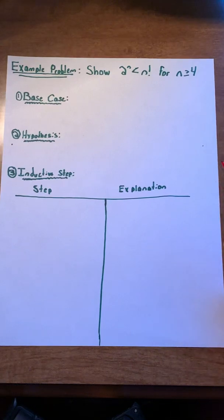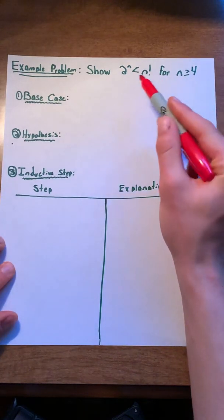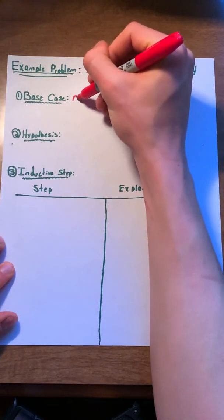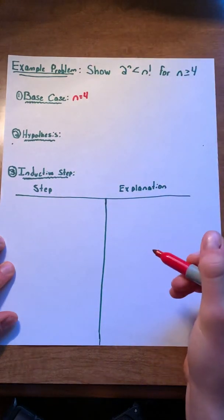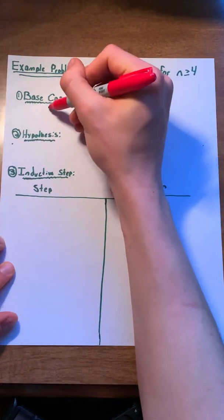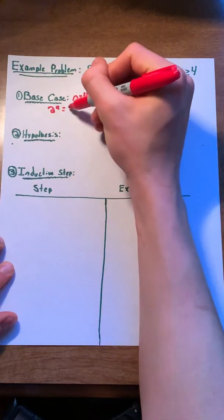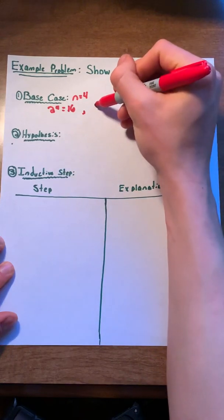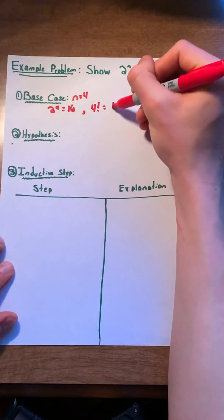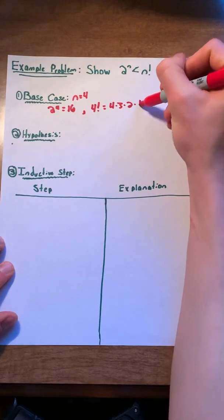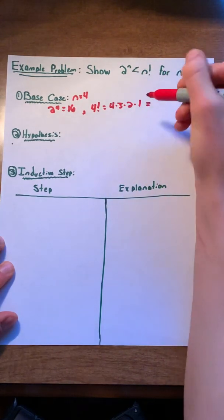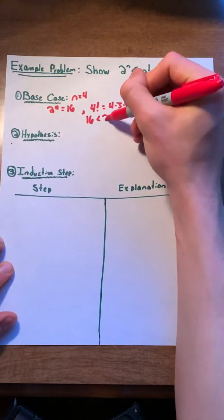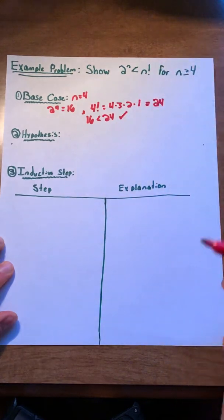The first thing we need to do is make a base case. In this case, the argument only holds when n is greater than or equal to four. So our base case will be n equals four. We know that two to the fourth equals 16. And we also know that four factorial, which equals four times three times two times one is equal to 24. 16 is less than 24, and so our base case holds.